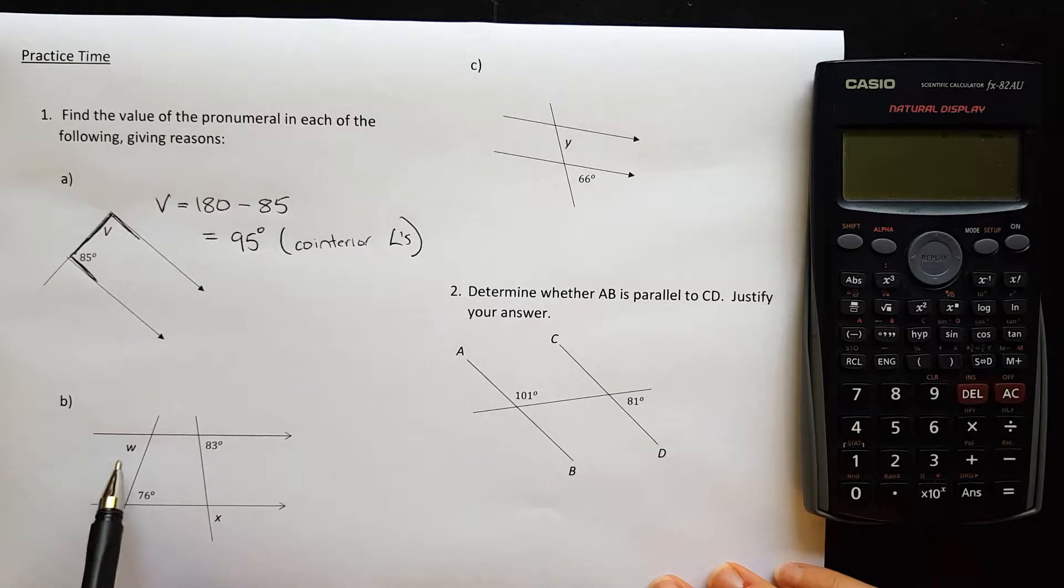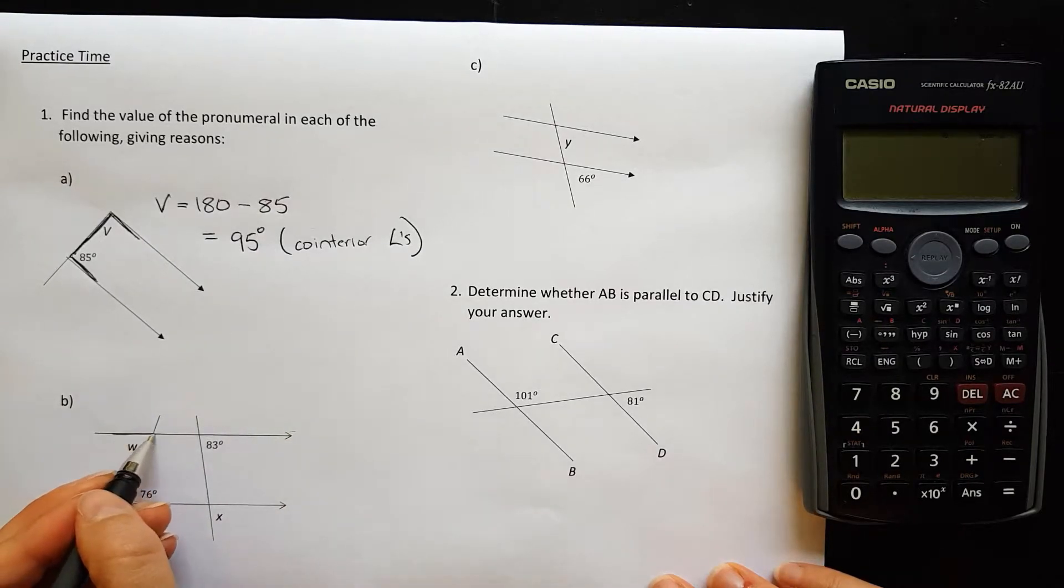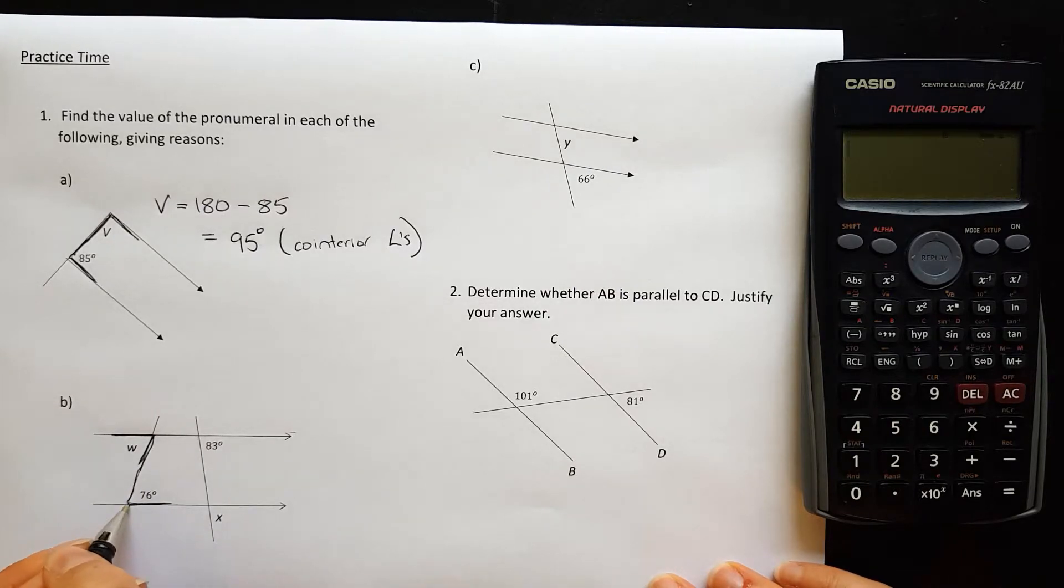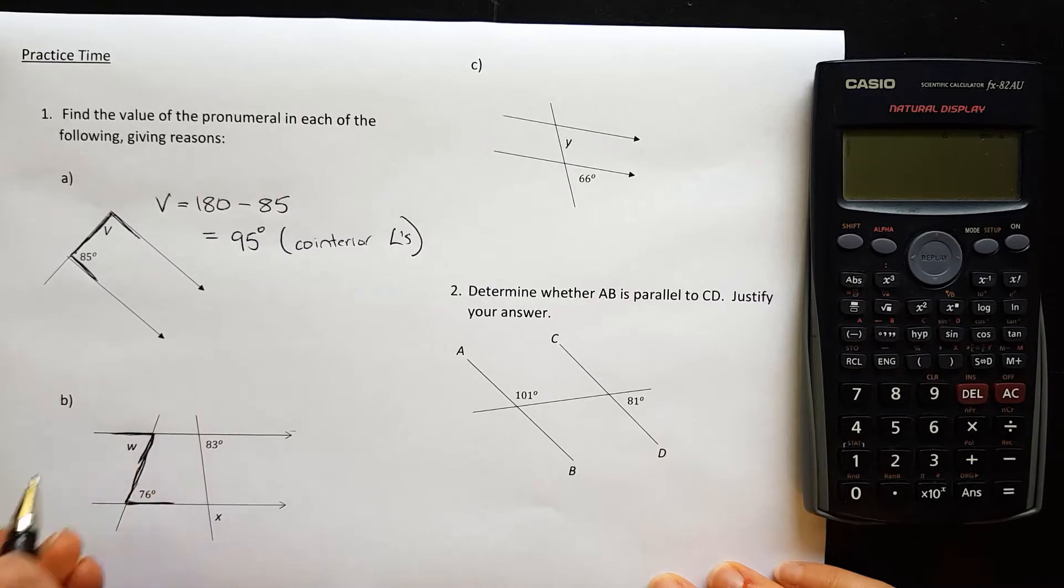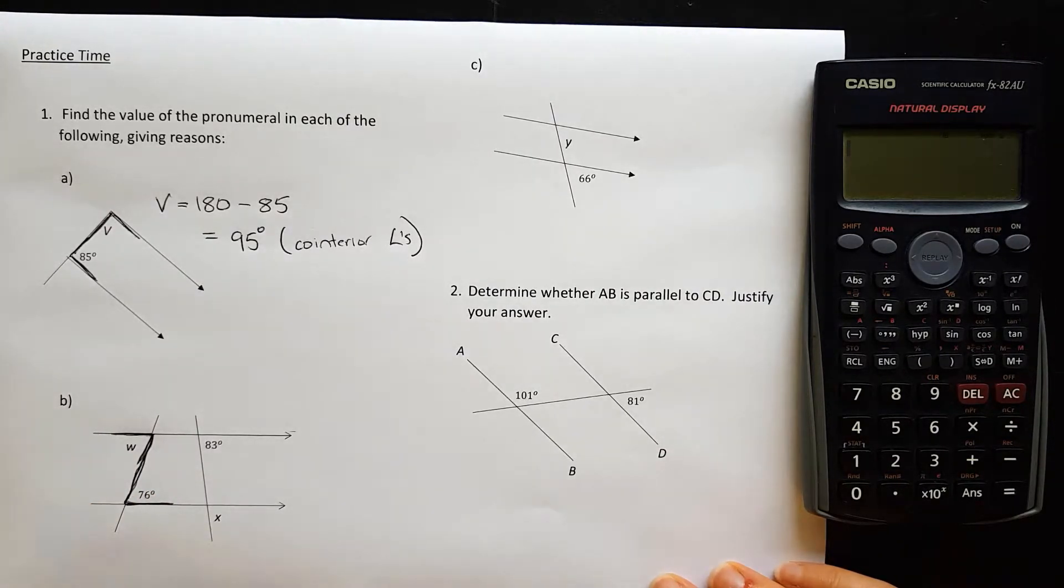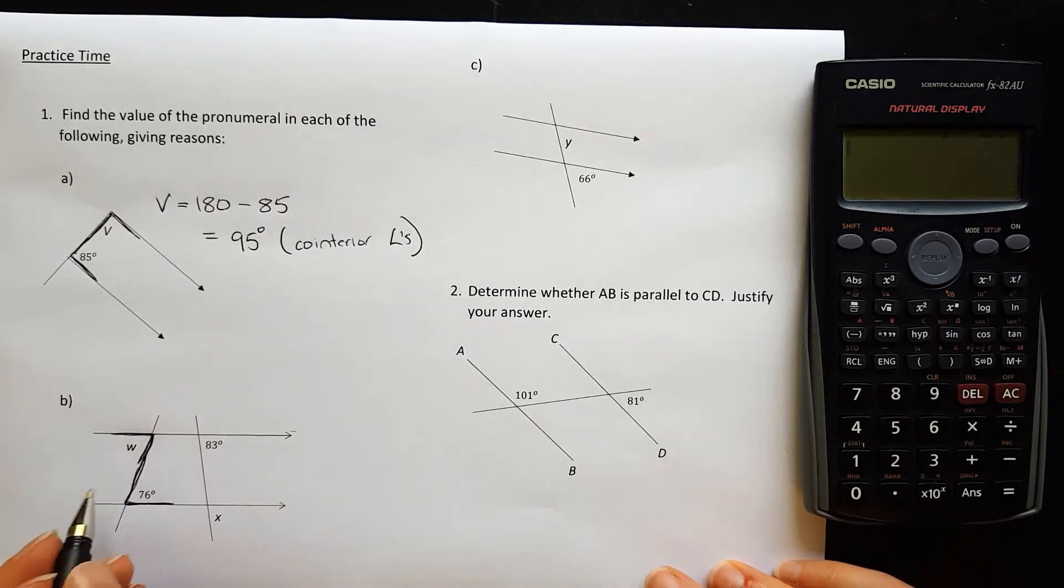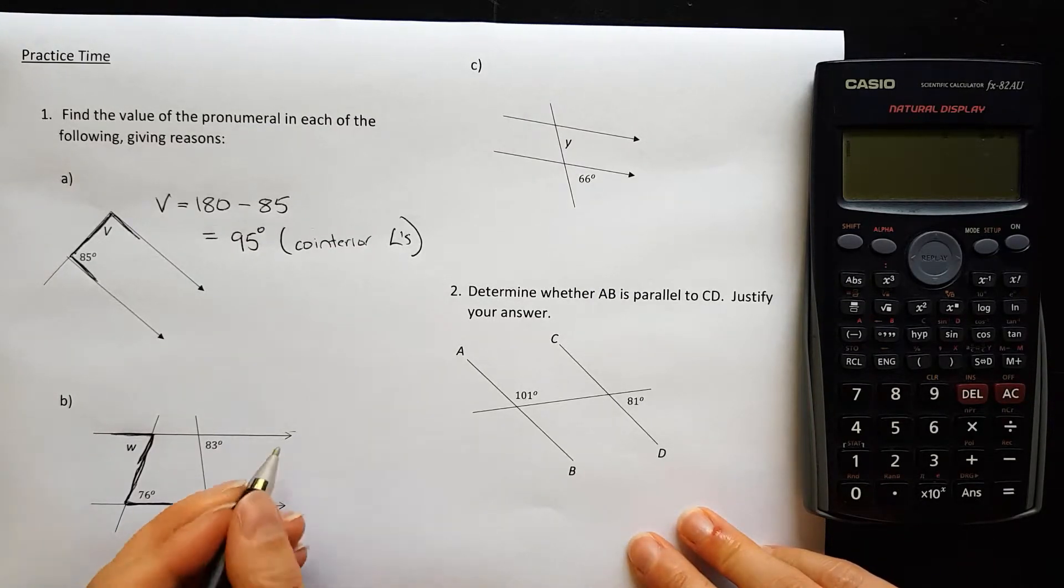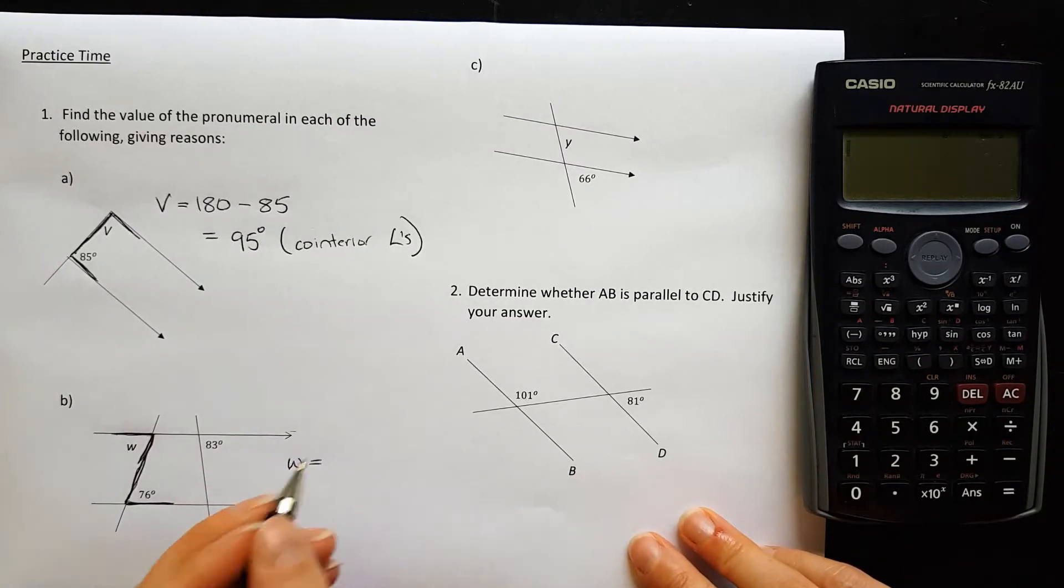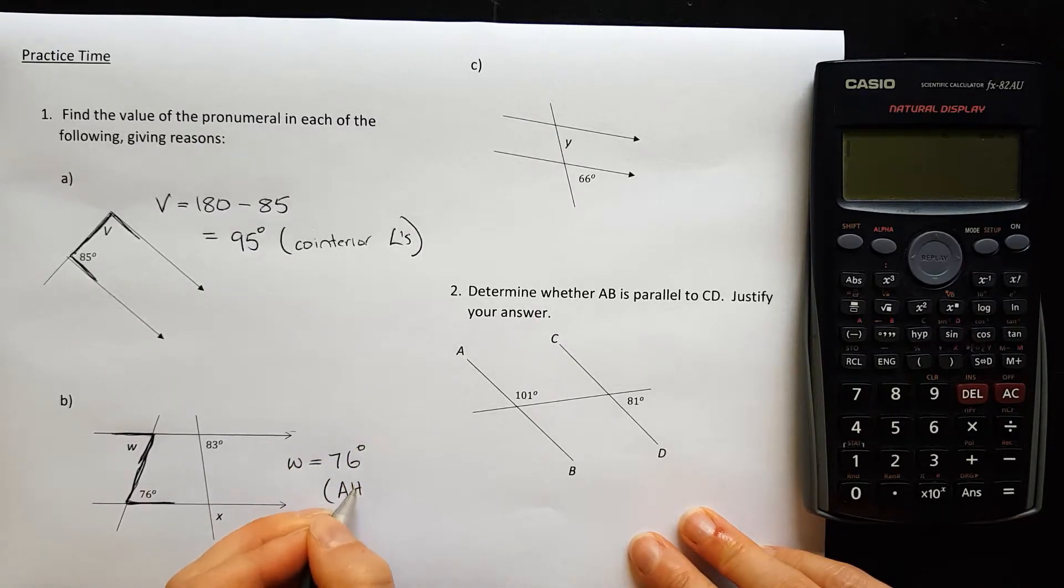In part B, we have two pronumerals here to find. Let's start with the W. So I have parallel lines here. That W and the 76 are forming a Z shape. A backwards Z shape, but still a Z shape. So that means that they are equal. W is equal to 76 degrees because of alternate angles.